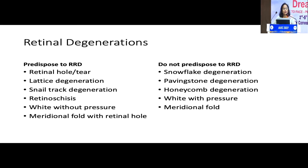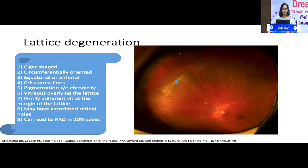Certain retinal degenerations predispose to rhegmatogenous retinal detachment: retinal hole or tear, lattice degeneration, snail track degeneration, retinoschisis, white without pressure, and meridional folds associated with a retinal hole at the apex. Certain degenerations do not predispose to rhegmatogenous retinal detachment, like snowflake degeneration, paving stone degeneration, honeycomb, white with pressure, or meridional folds alone.